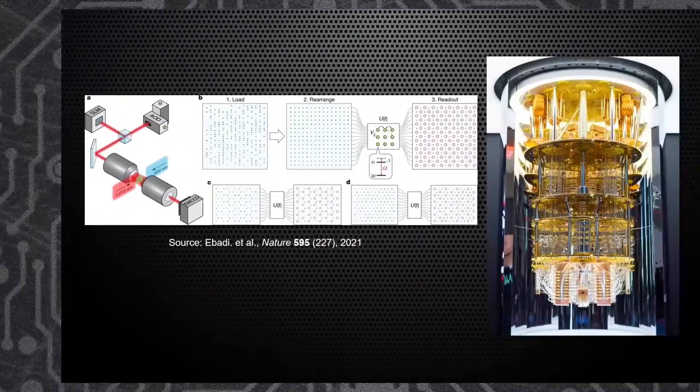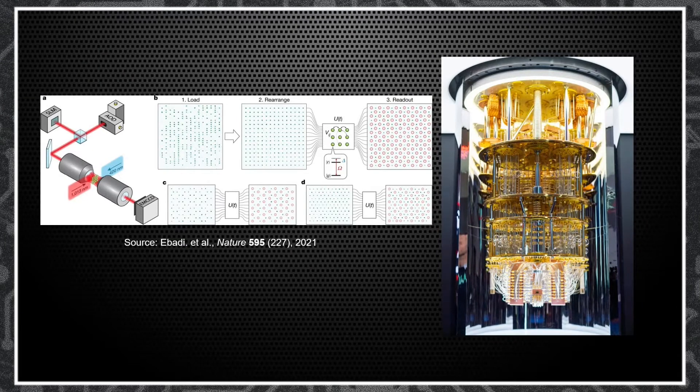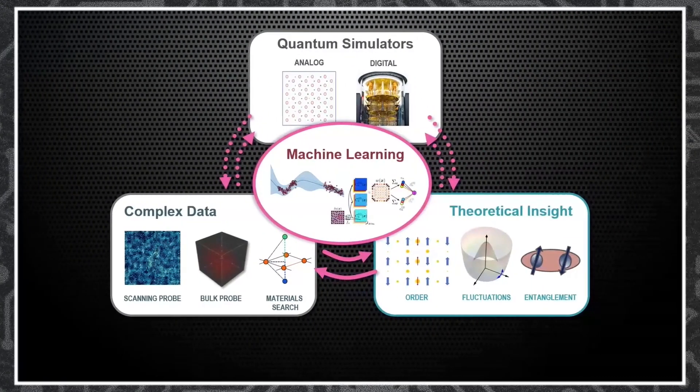We are a lucky generation because we can now see these spins and implement them into a set of qubits. They can be individually controlled, used to be programmed, and used for computation. There are many different platforms for implementing quantum computers. However, this technology is still at infancy. In my research, I try to bridge this nascent technology with more established classical computing so that we can better understand what's going on in quantum simulators and make better use of them to solve problems in the material world, bridging between complex and rich data with theoretical insight.